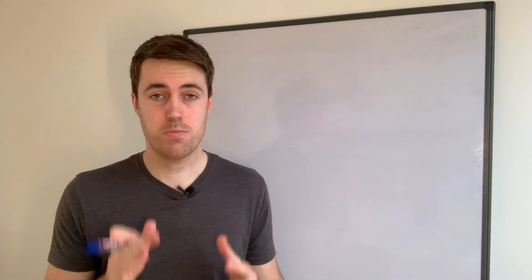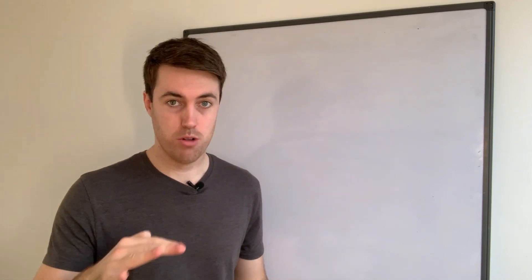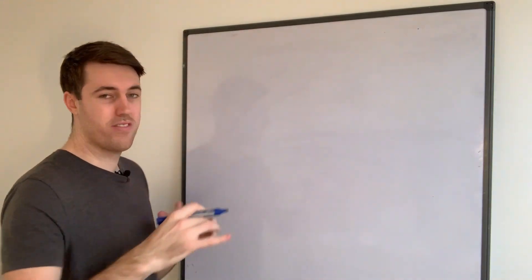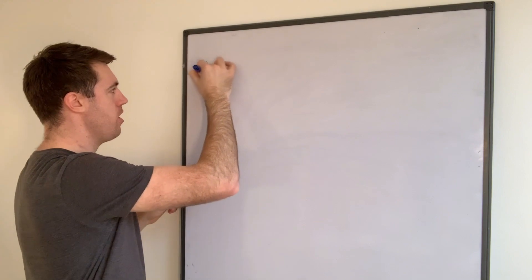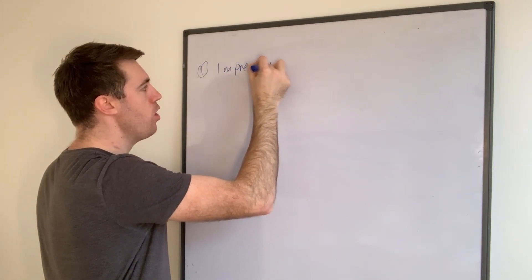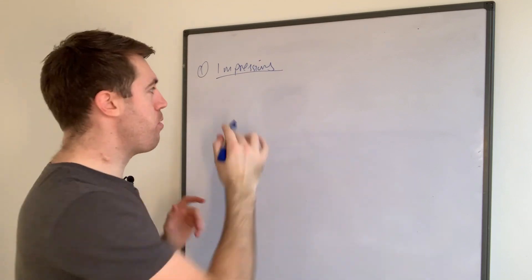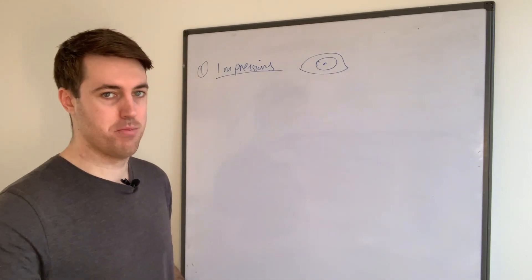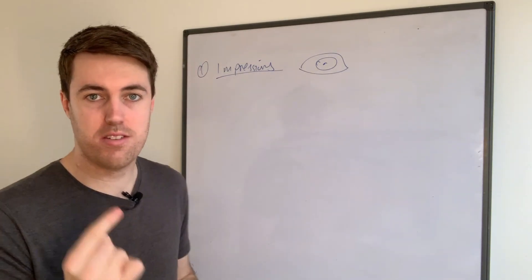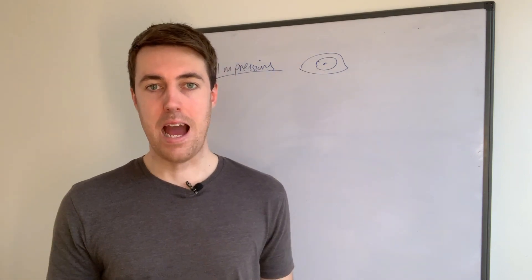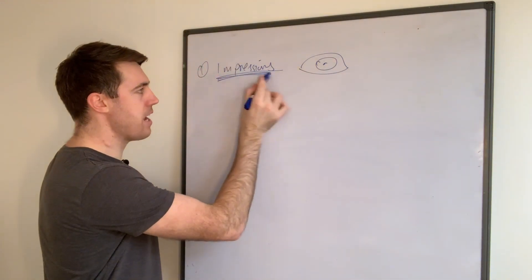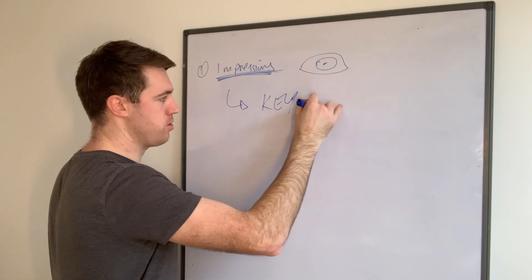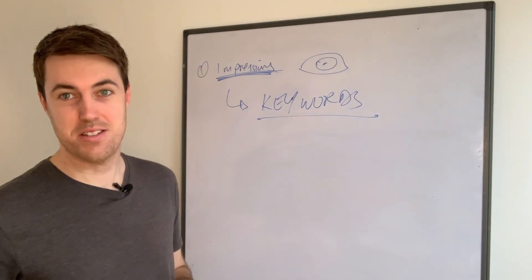Three clear optimization goals — and make sure you stick around for the third one because I'm going to drop some really pro-level, in-depth training. Goal number one is impressions. Impressions is all about the amount of eyeballs on our product — who's looking at it and how many times every single day. This is the first thing we need to consider when optimizing our listing.